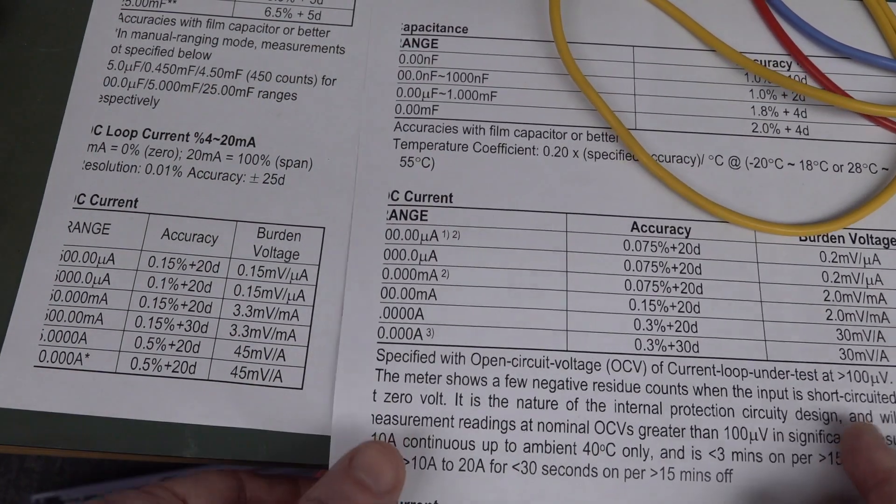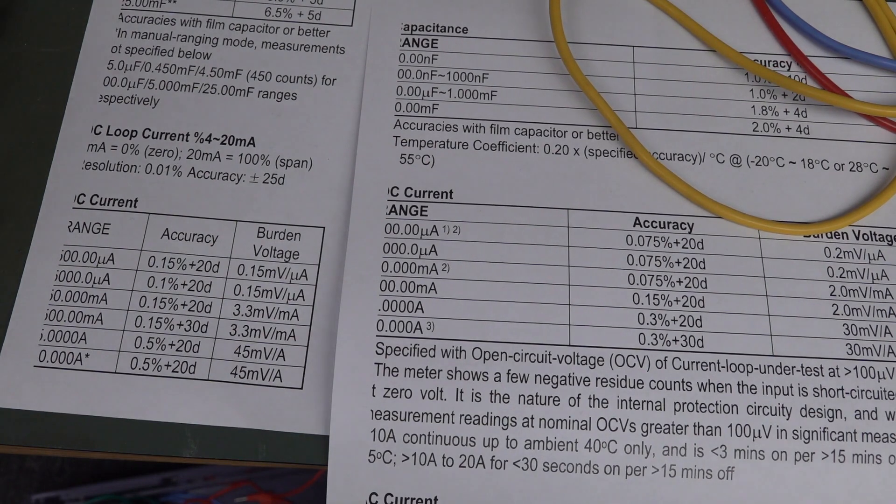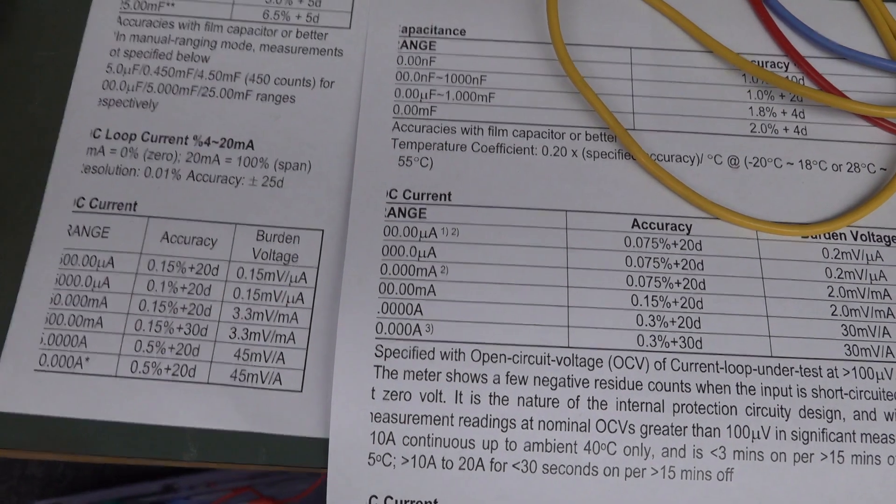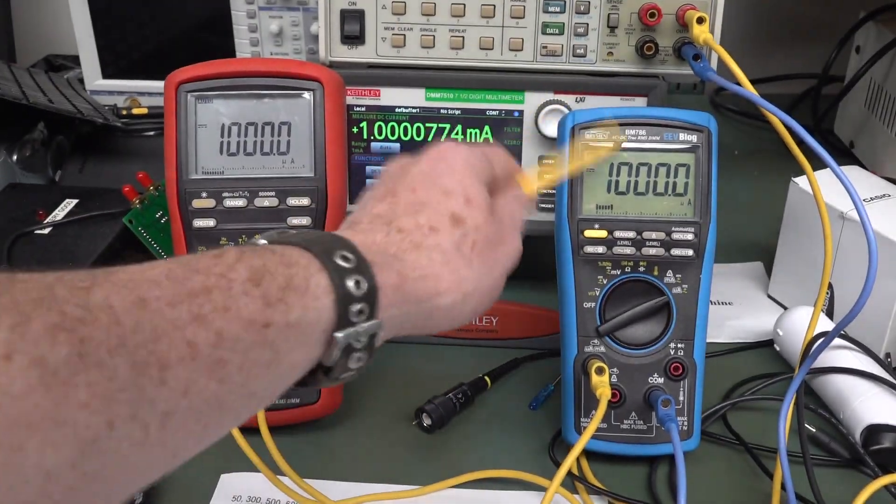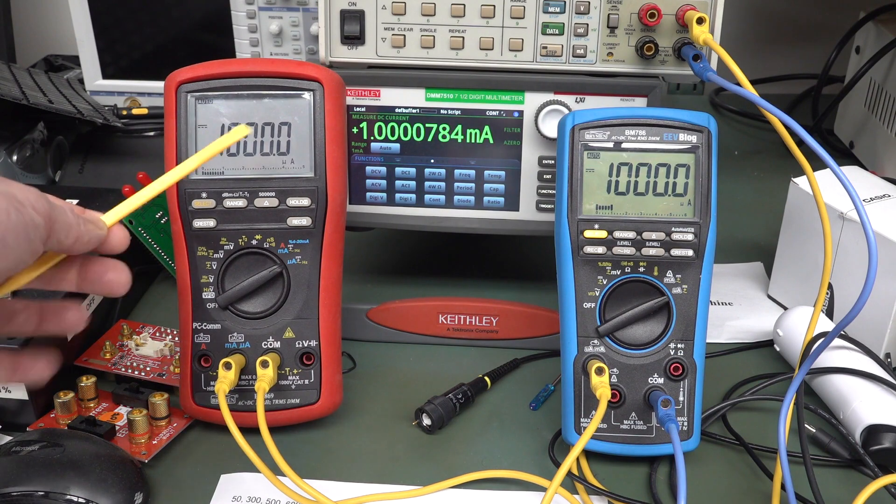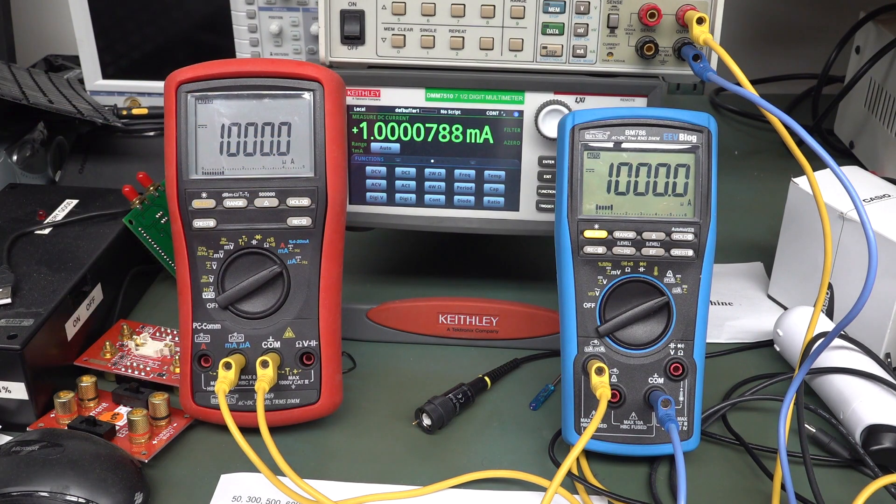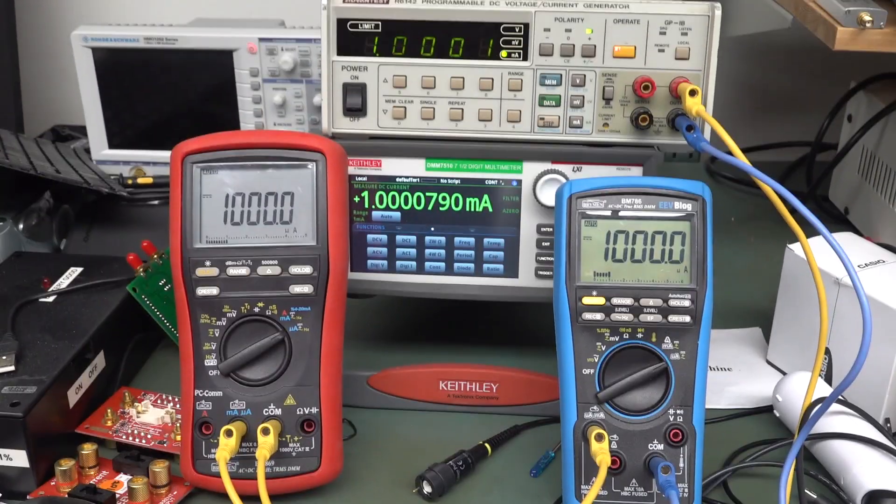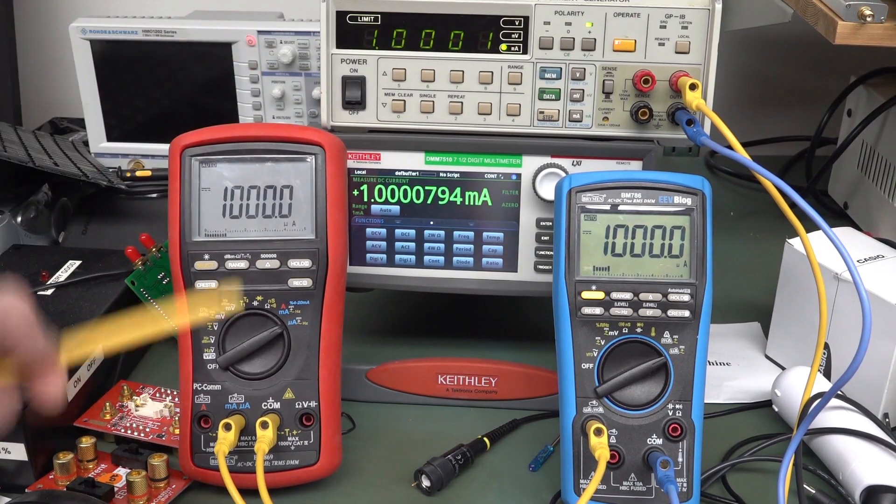So if you're after absolute DC current accuracy, the cheaper BM786 is actually better than the top of the line 869. Anyway, some people wanted me to do a simple test. Yes, I can do that. So I've got my calibrator here.